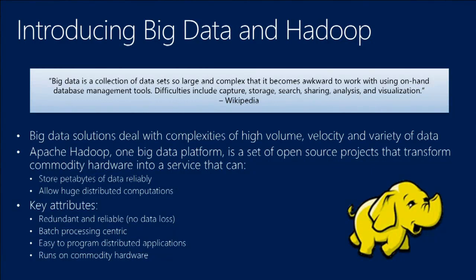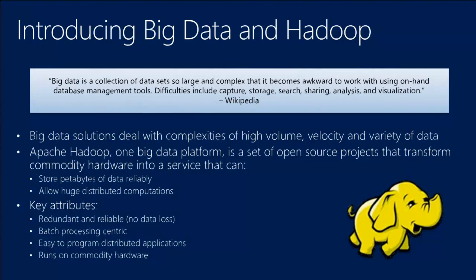Key attributes: Hadoop is redundant and reliable. When using the Hadoop file system, redundancy is built in — should one node go down, there are copies of the data elsewhere that can be used. It's batch processing centric. A query will fire off a series of jobs and batches, and this is why we don't get fast response times — there's an enormous amount of work going on under the covers.